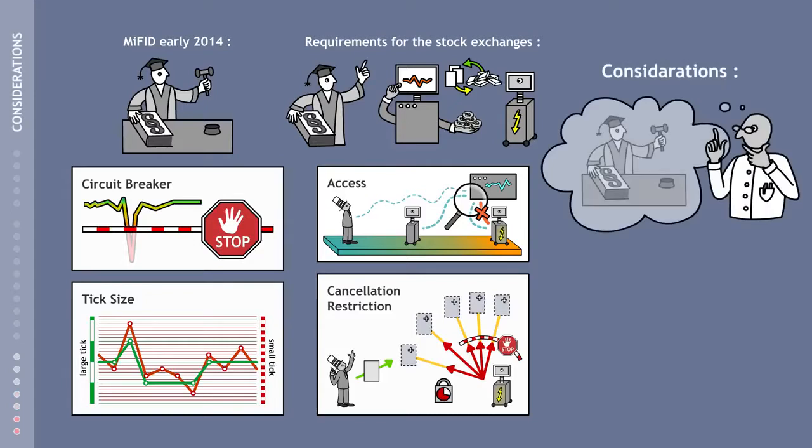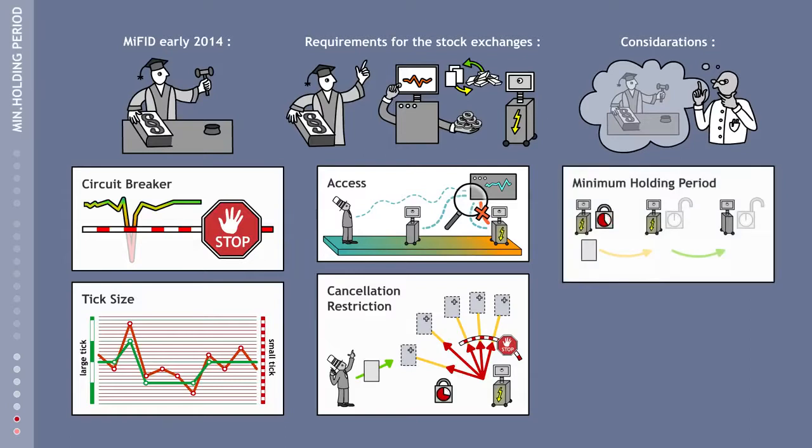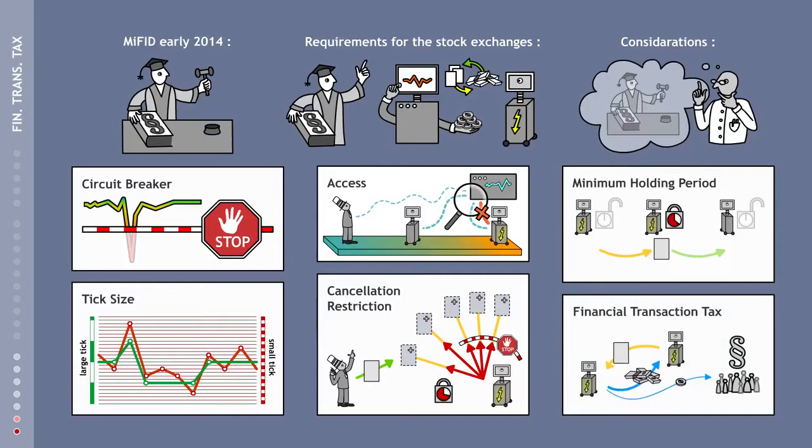Lastly, there are two further ways to regulate high-frequency trading. The enforcement of a minimum holding period for securities would mean that it would not be possible to immediately resell shares that have just been acquired. This would prevent high-frequency traders from interposing themselves on every transaction conducted. Ultimately, the introduction of the much-vaunted financial transaction tax would make high-frequency trading less lucrative.